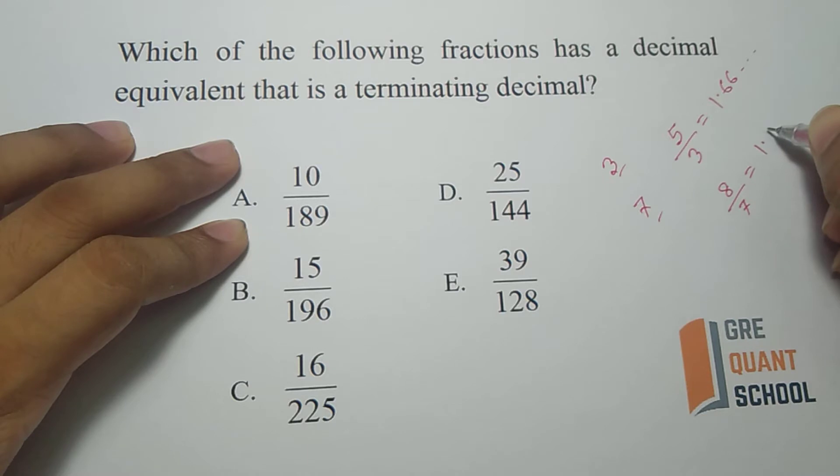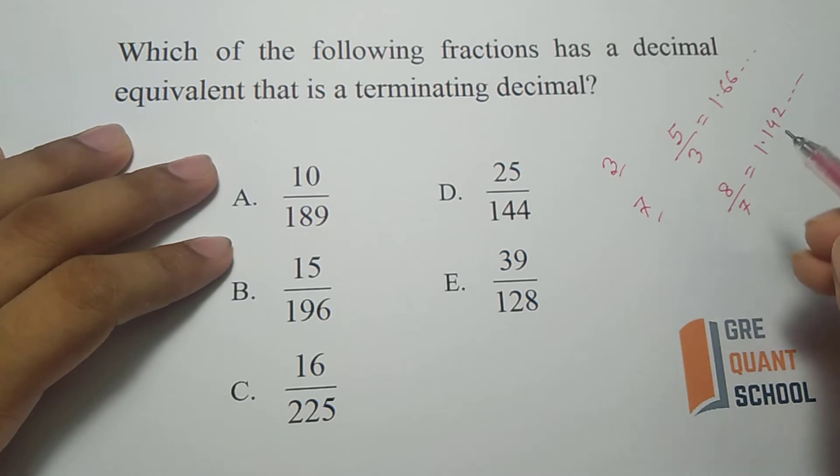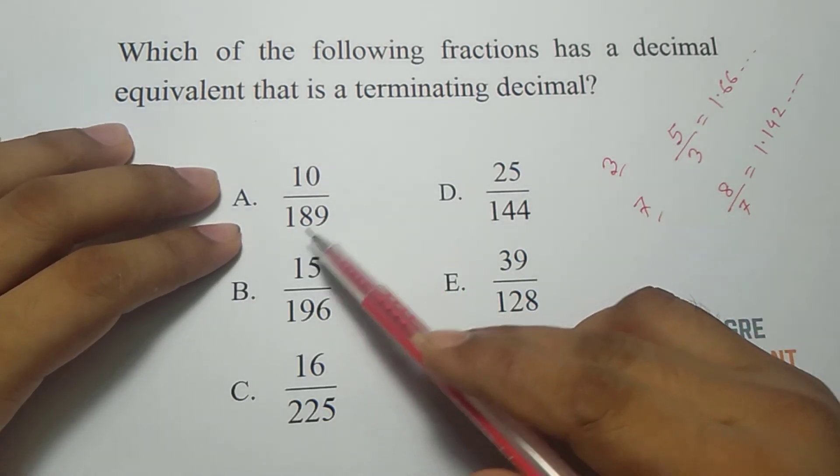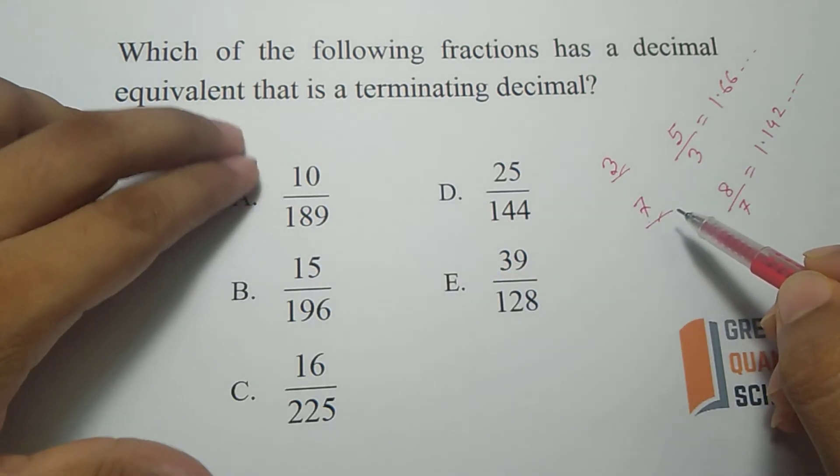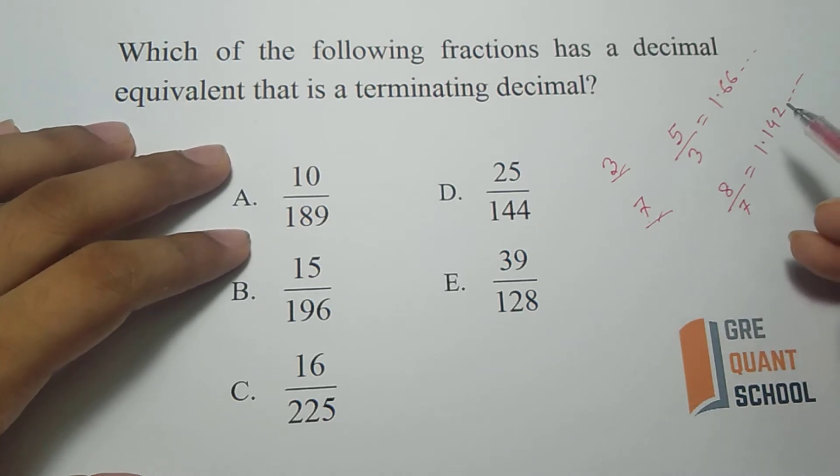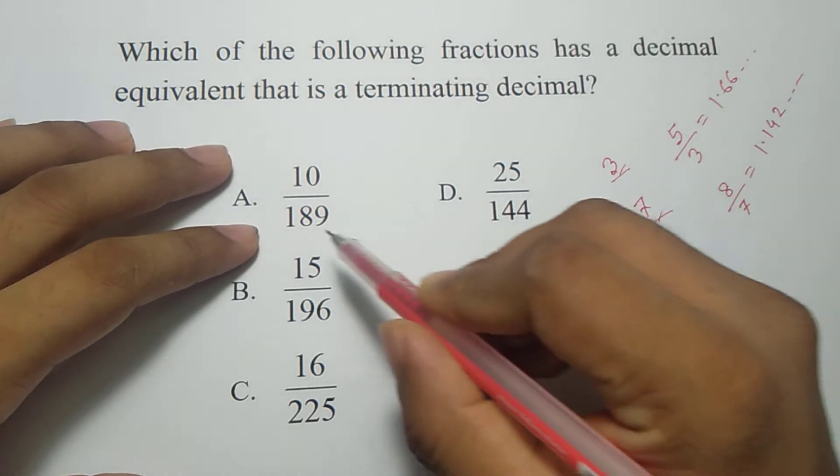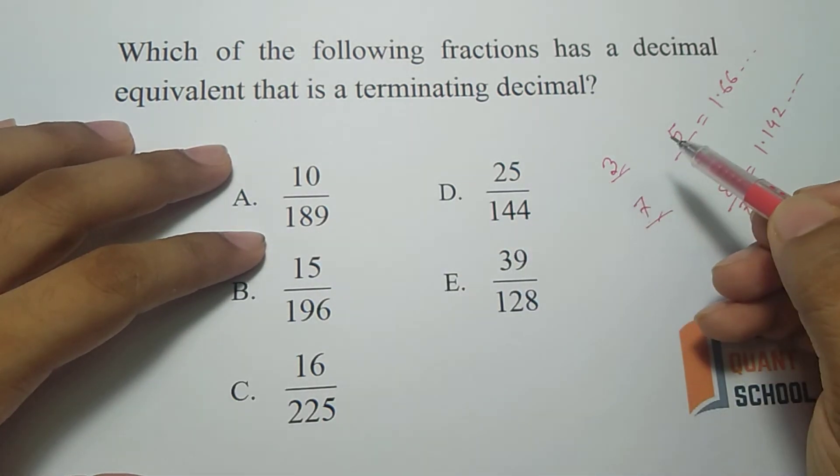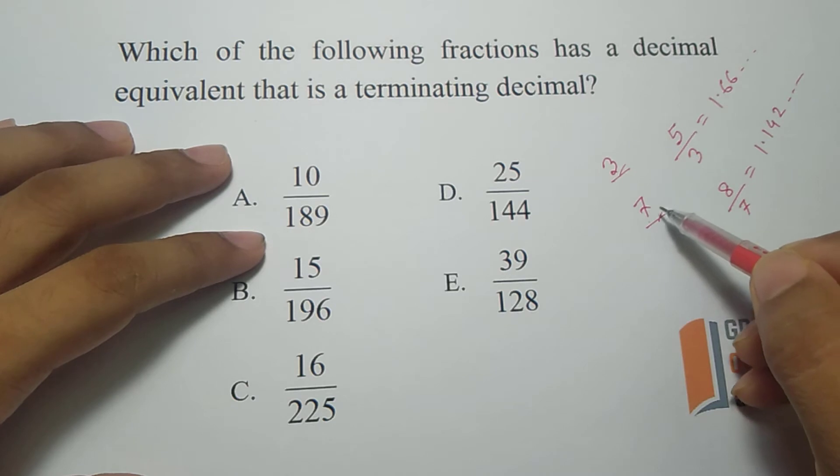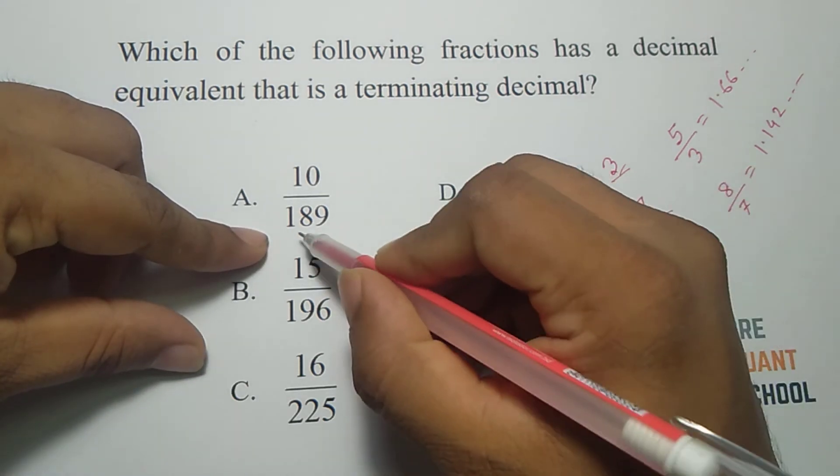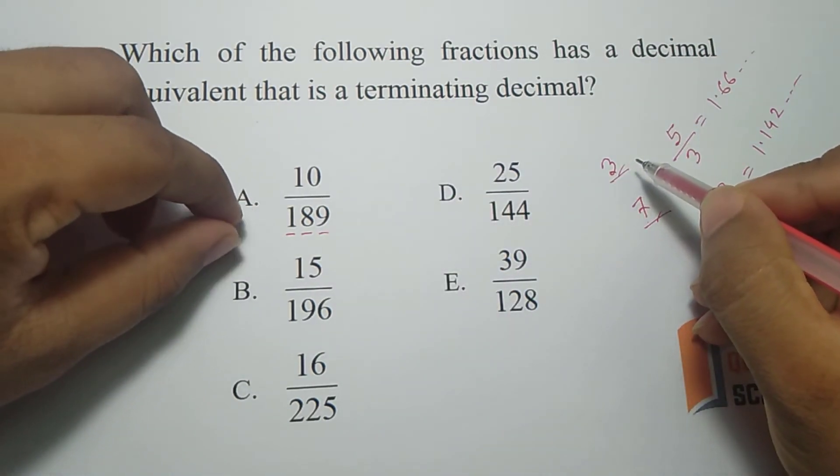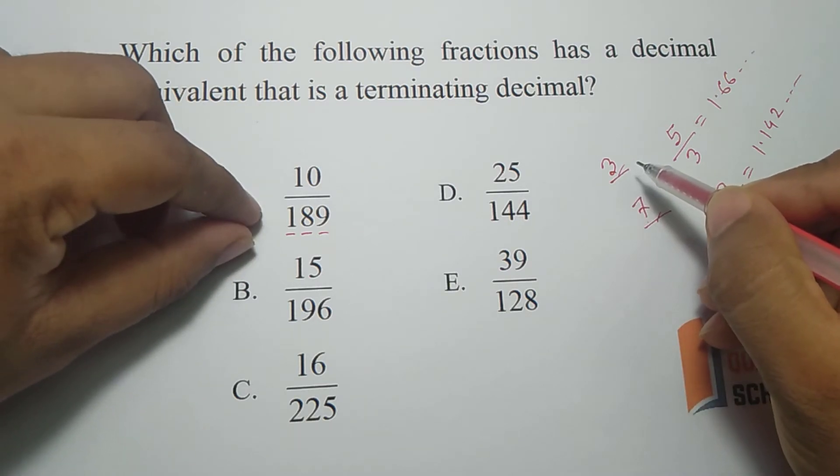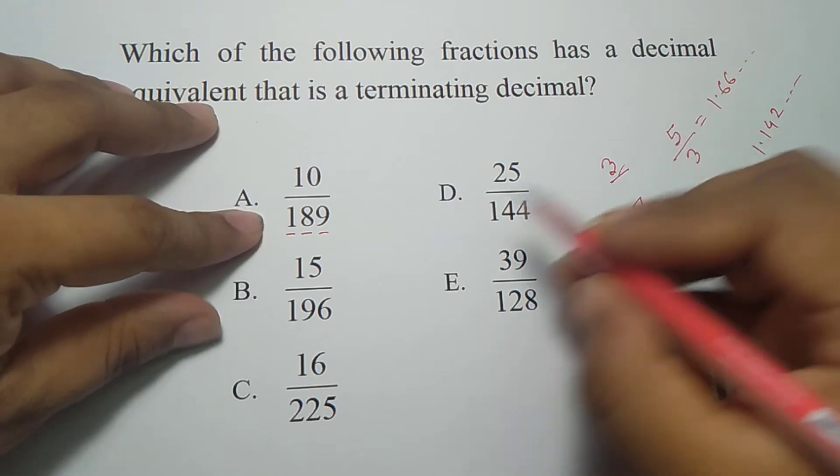So we need to check the denominator, is there any 3 or 7 remaining after calculation. Checking with 3 is much easier than checking with 7 as we know the sum of the digits, if it's divisible by 3 then the number is also divisible by 3.